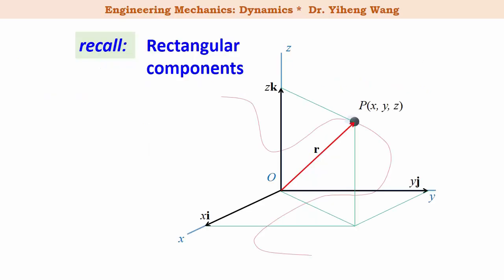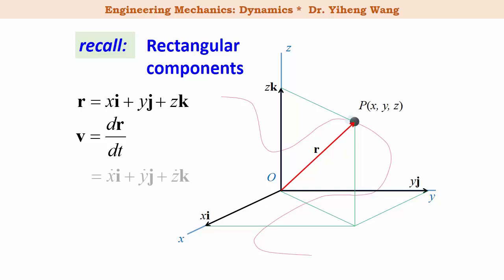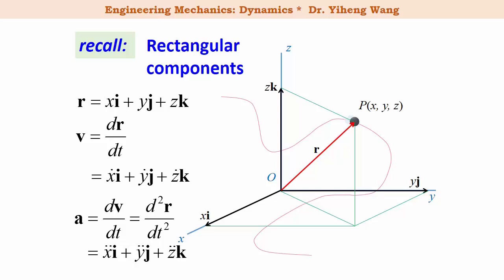As a review, we have already learned about the curvilinear motion represented in the three-dimensional rectangular coordinate system. The position of the particle is written in Cartesian vector form as xi + yj + zk. Its velocity is dr/dt, which is ẋi + ẏj + żk, where ẋ, ẏ, ż are the time derivatives of x, y, and z. And its acceleration is the derivative of velocity with respect to time, or the second derivative of position with respect to time, and it equals ẍi + ÿj + z̈k, where ẍ, ÿ, z̈ represent the second derivatives with respect to time of x, y, and z.